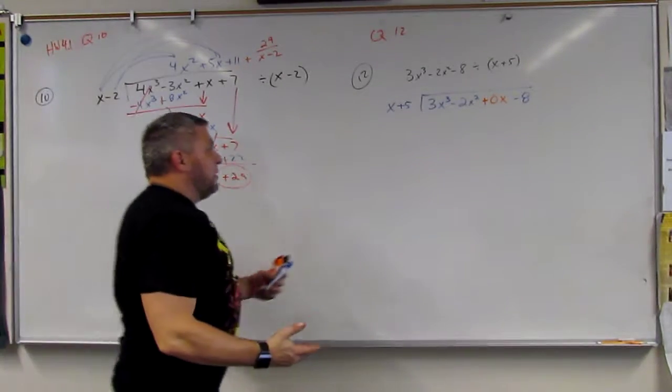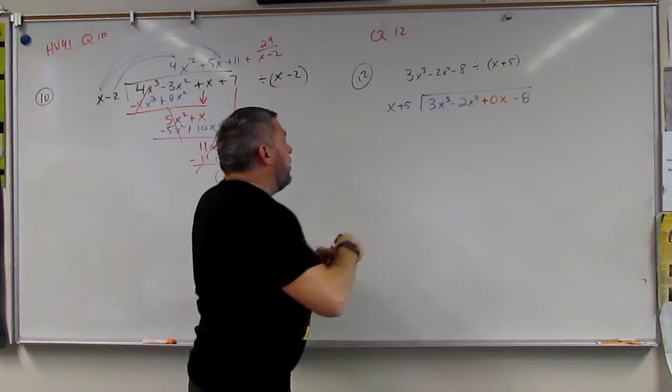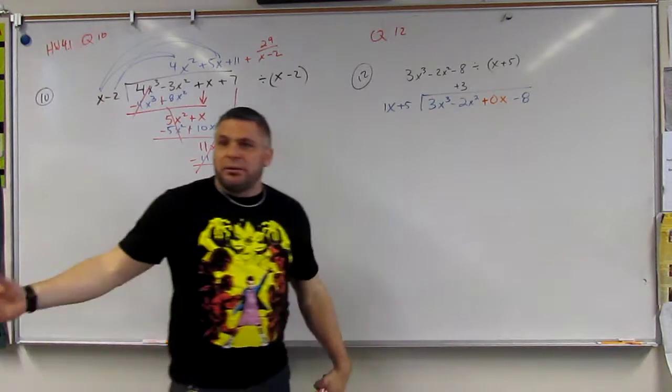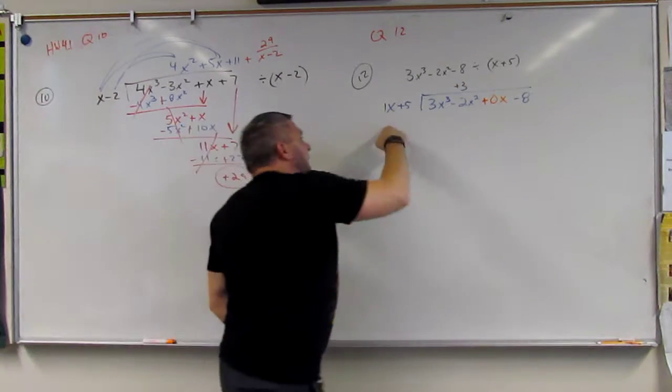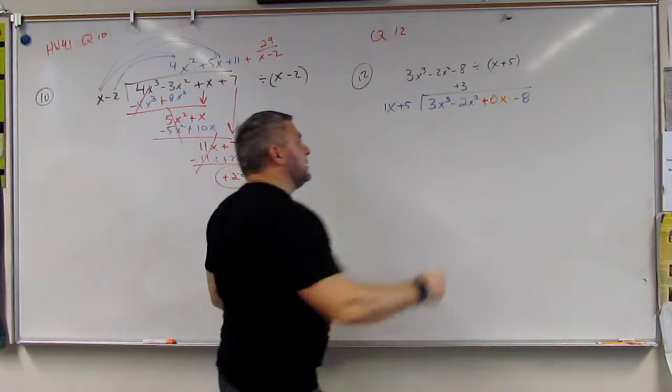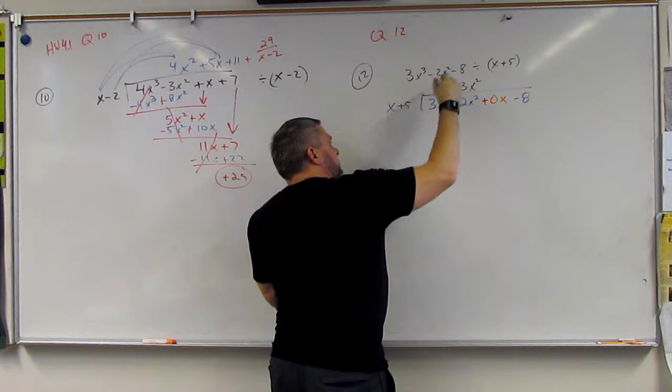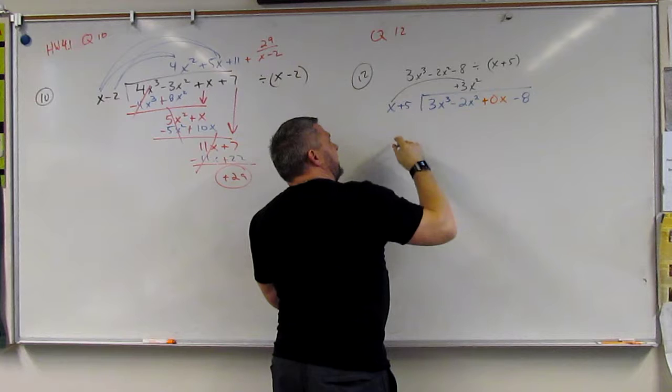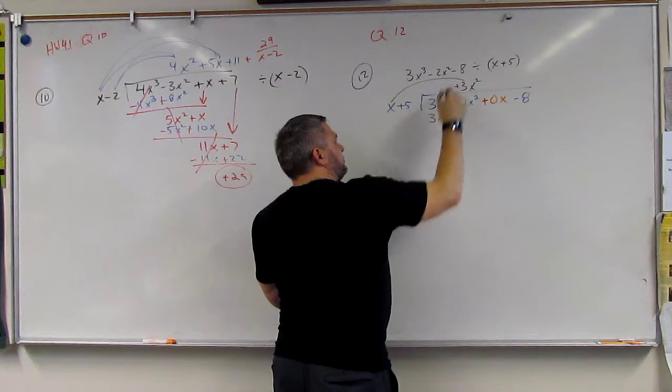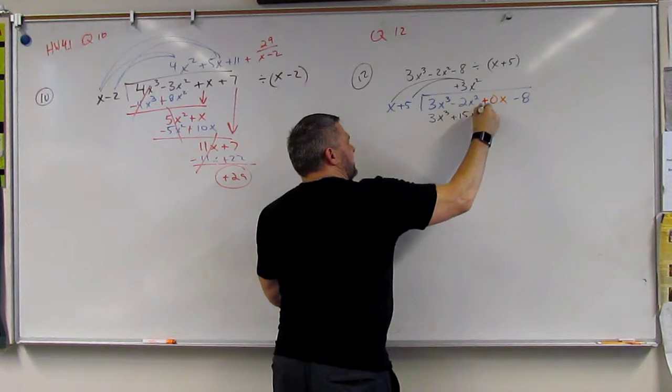So I know, I'm thinking, what times 1 is 3? That's 3, right? What times x is x cubed? x squared. And then I multiply them. This times this is 3x cubed. This times this is 15x squared.